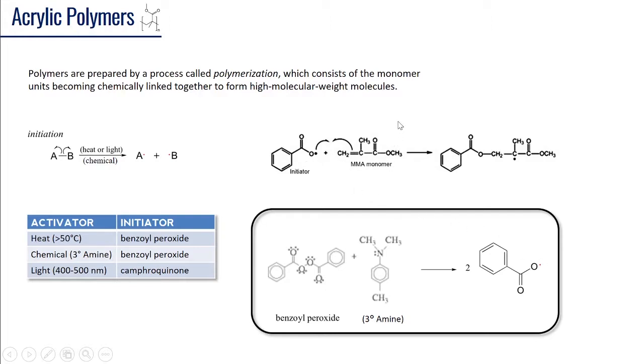The tertiary amine will serve to cleave this bond here and form this free radical that starts this polymerization reaction of the methylmethacrylate monomer unit. So the second method that we typically see is a chemically activated acrylic.